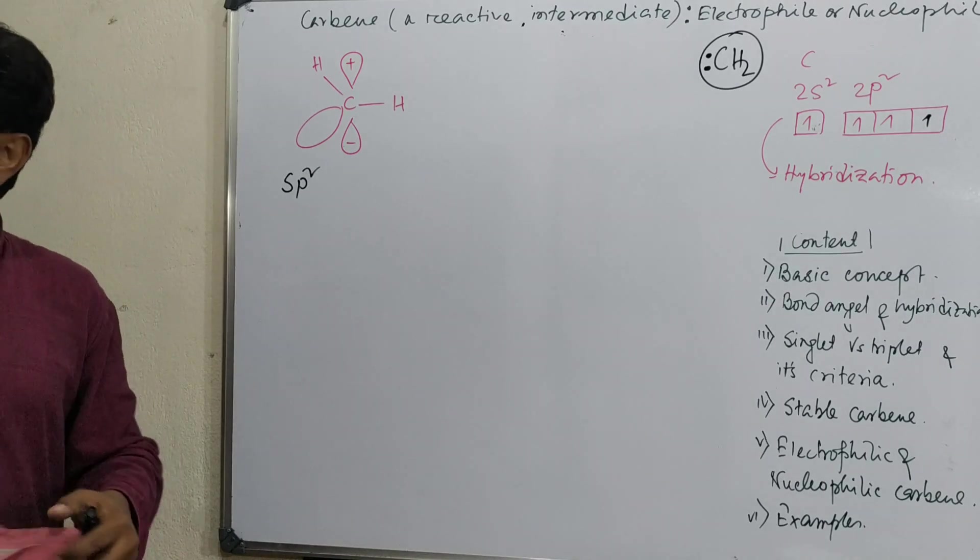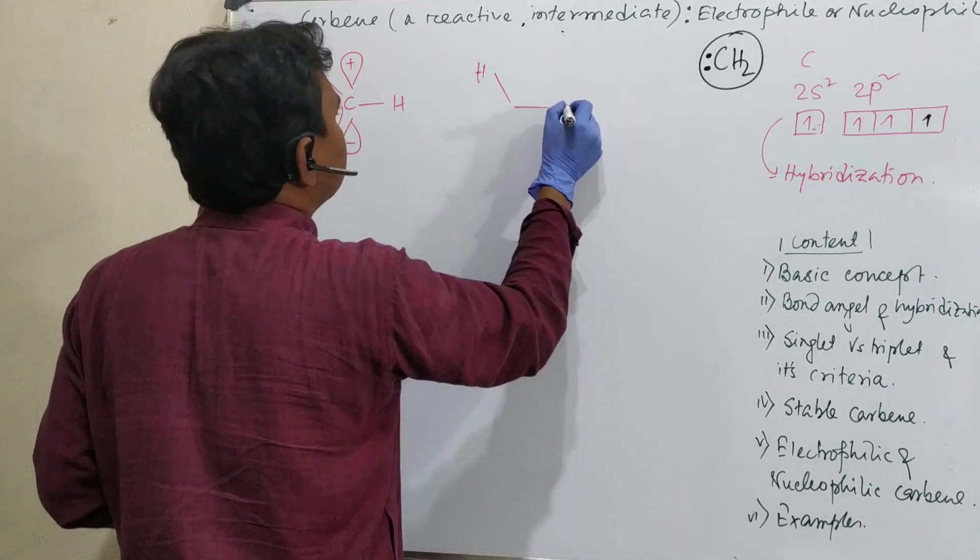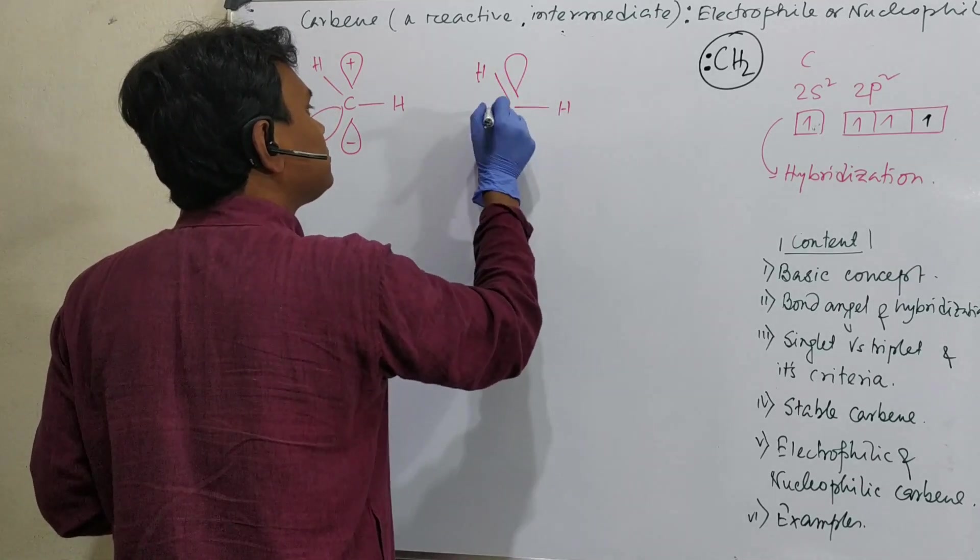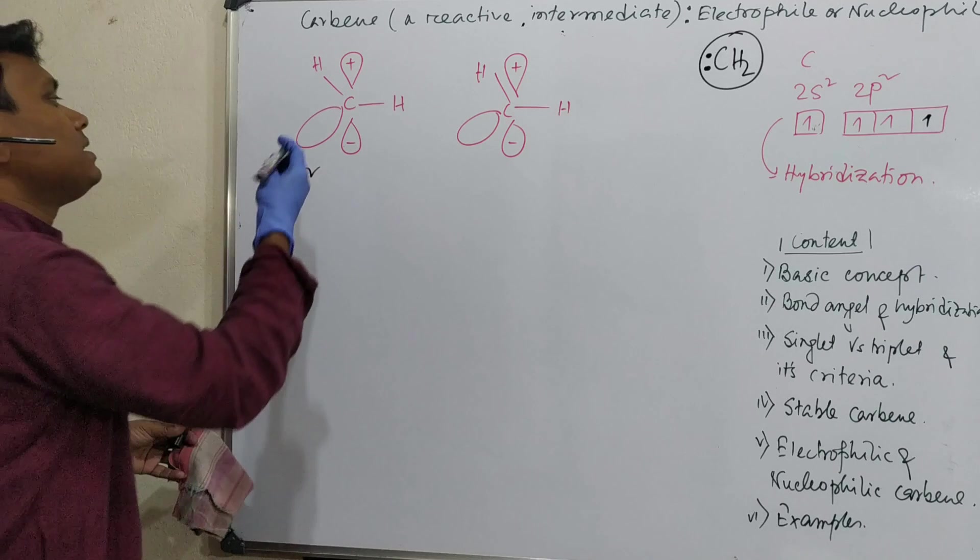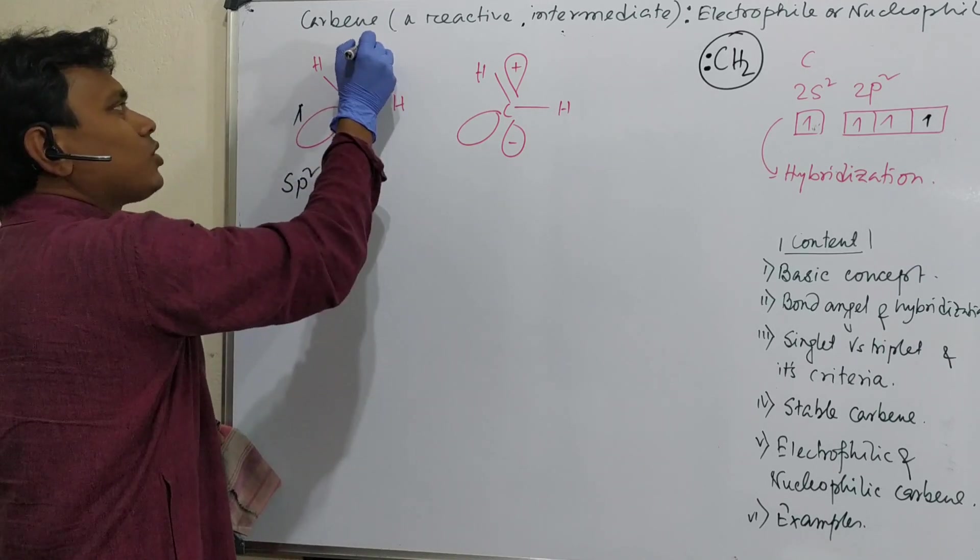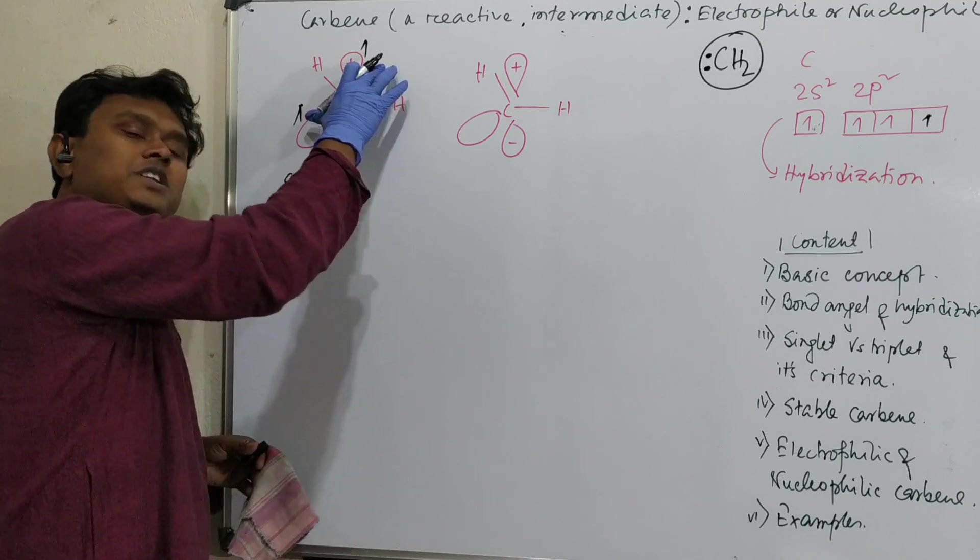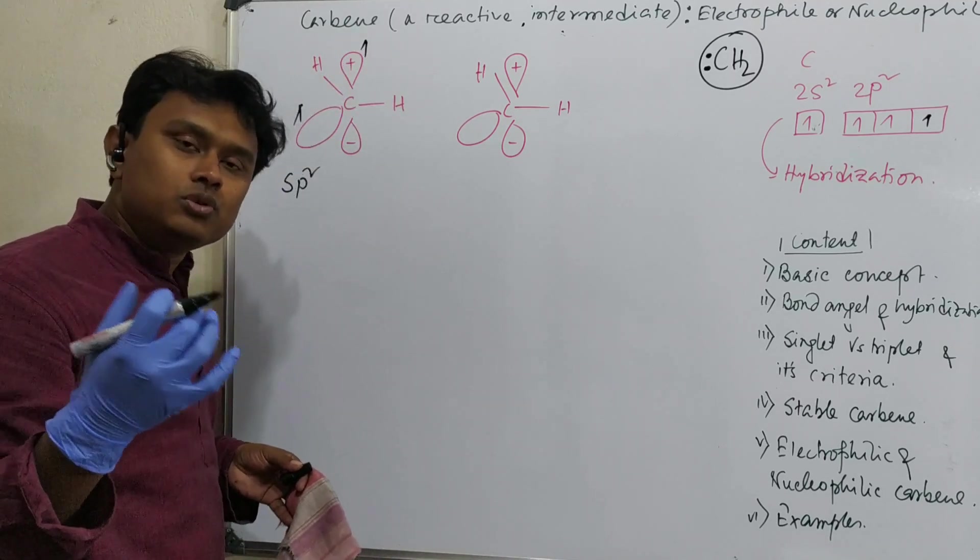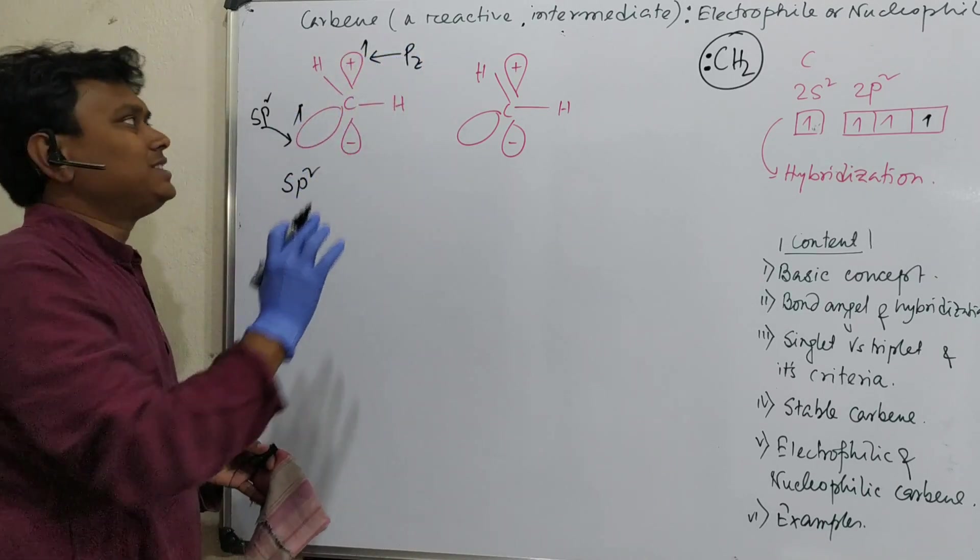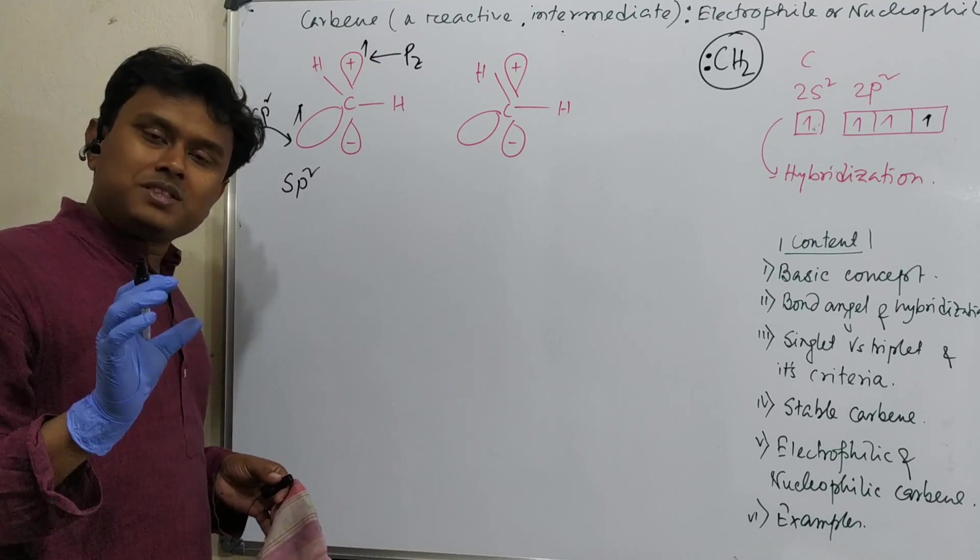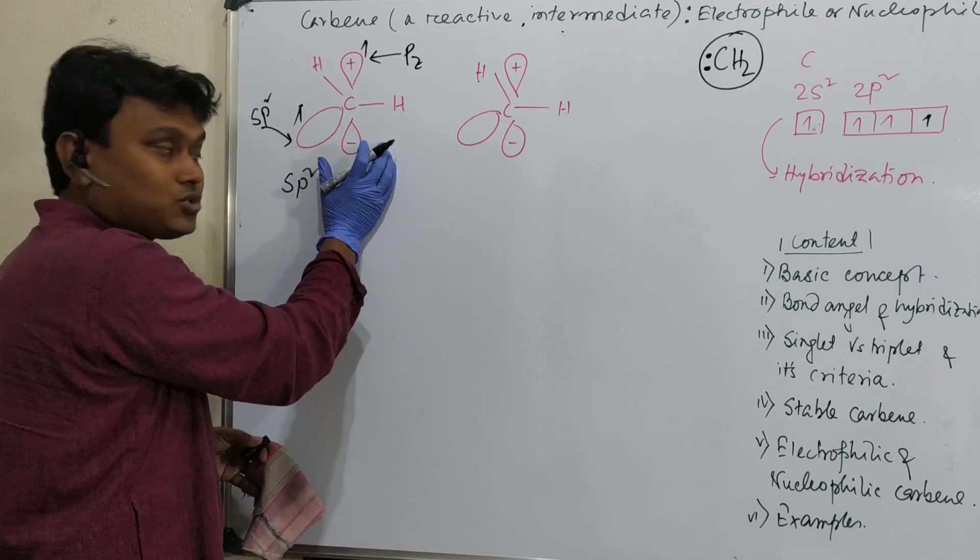For sp2, two options are possible. One option is that this orbital will contain one electron and this p orbital will contain one electron. Why? Because electron prefers to remain in half-filled after that it undergoes full-filled like Hund's rule. Although these are not same energy levels, they are closer in energy. If two electrons remain in same orbital, there is electron-electron repulsion. So energetically this is favored.